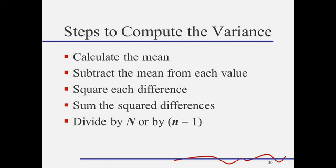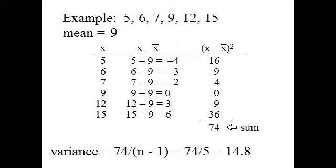These are the steps we need to compute a variance. But instead of me reading these to you, let's look at an example. Let's assume that these six numbers are a sample and we know already that the mean is 9. The first step is to list out all six numbers, and I've done that in the first column labeled x. The next step is to subtract the mean from every number, and I've done that in the column labeled x minus x bar.